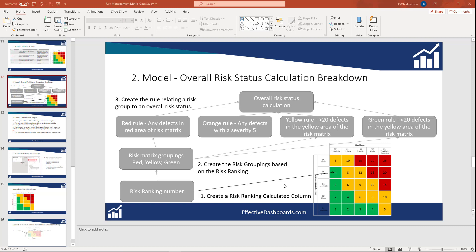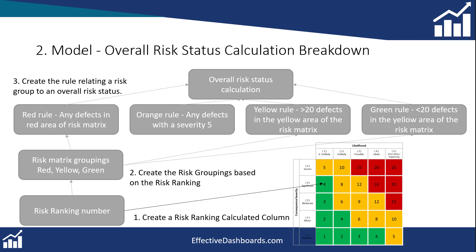We'll flick back to our PowerPoint presentation. The next step is to go and create a count of the number of work orders that meet each of these criteria — red, orange, yellow and green — because we need to count these work orders to understand which of these to input into the overall risk status for the site.